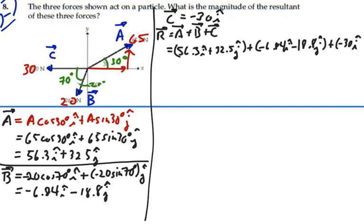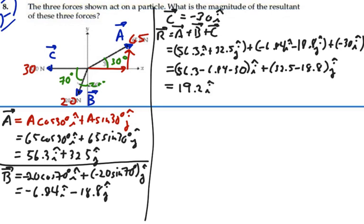So we have, let's put it this way, 56.3 minus 6.84 minus 30, all that I. That's the beauty of I, J, K - put all the I's and J's together. And we have 32.5 J minus 18.8 J. So all this is equal to 19.2 I plus 13.7 J.